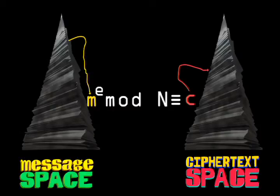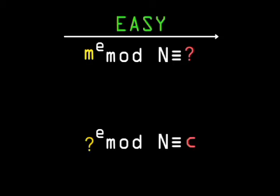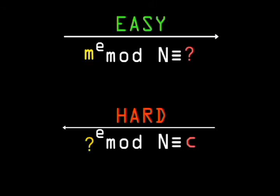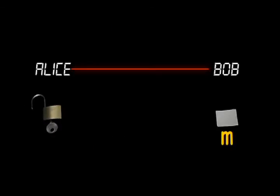This results in some number, c. This calculation is easy to perform. However, given only c, e, and n, it is much more difficult to determine which m was used, because we'd have to resort to some form of trial and error. So this is our one-way function that we can apply to m, easy to perform, but difficult to reverse. It is our mathematical lock.